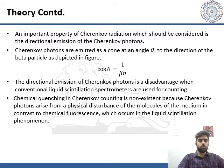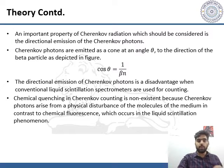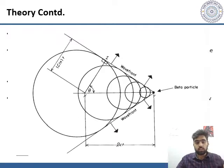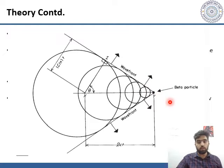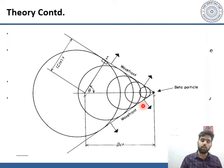An important property of Cherenkov radiation that should be considered is the directional emission of Cherenkov photons. The Cherenkov photons are only emitted as a cone at an angle theta to the direction of the beta particle. As you can see, the Cherenkov radiation is only emitted as a cone with respect to the angle theta. Here the wavefronts are shown in a 2D figure.